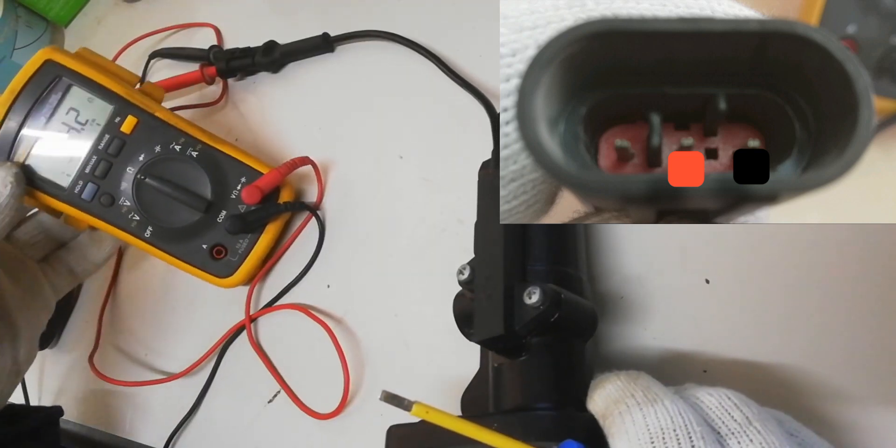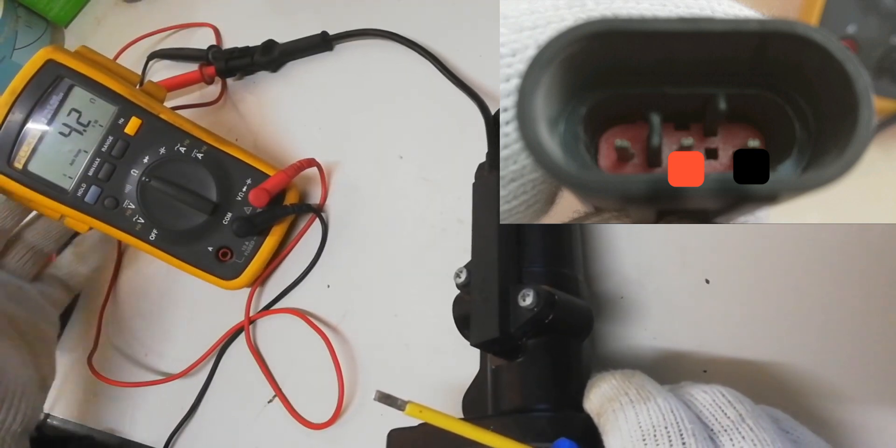While the clutch pedal position is in a neutral position, 4.2 ohms is the resistance of the clutch pedal position sensor.